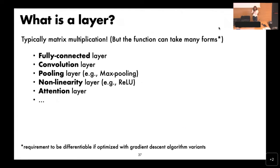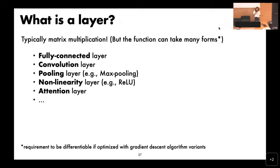If you want to optimize with gradient descent variants, the requirement is that the function has to be almost everywhere differentiable. Some examples of standard layers are: fully connected (also called linear), convolutional layer, pooling layer, non-linearity (with different forms), and attention — though I won't cover attention myself as the next speaker will address it.